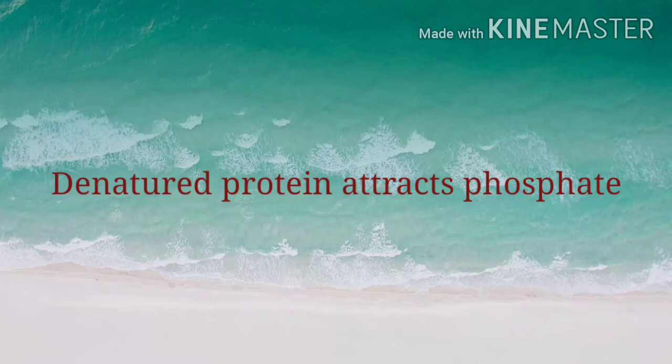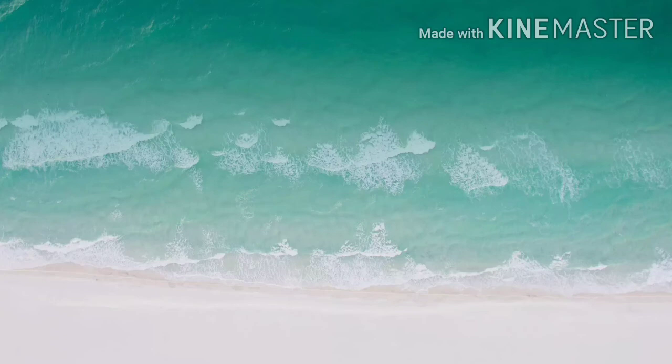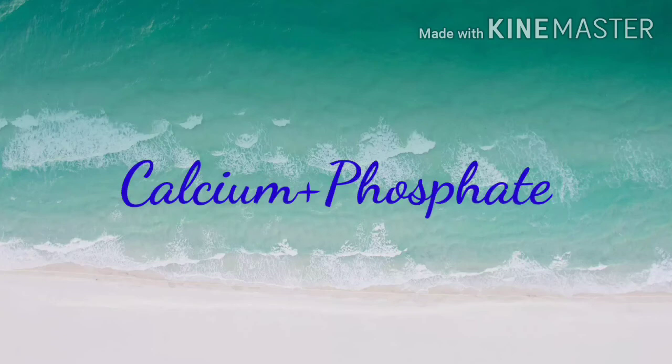Now let's talk about the mechanism of dystrophic calcification. In dead or degenerated tissue, there is denaturation of protein. Due to this denaturation, the protein components usually bind with phosphates. These phosphates attract calcium ions within the body, leading to the formation of calcium phosphate, which is deposited in the form of dystrophic calcification.